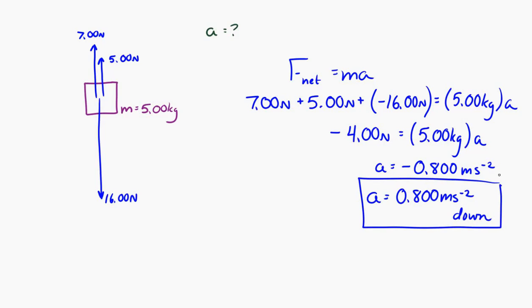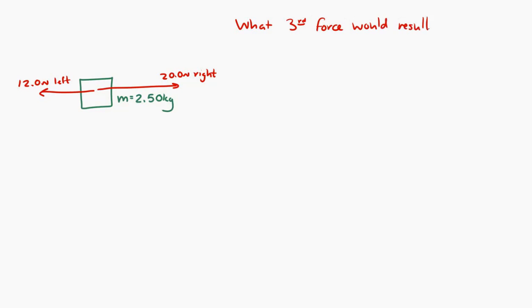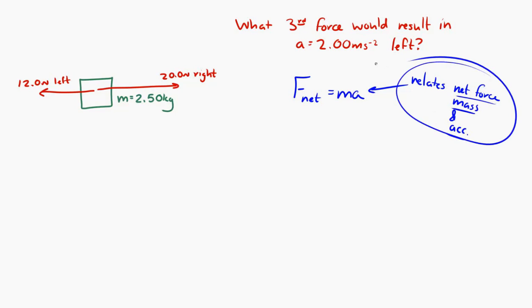Let's try one more example. I have a mass of 2.5 kilograms, and I apply two different forces to it: 12 Newtons to the left and 20 Newtons to the right. I'm going to ask a slightly different question here: what third force would result in an acceleration of 2 meters per second squared to the left? Newton's second law is useful here because it relates net force and acceleration, which is exactly what this problem is asking.